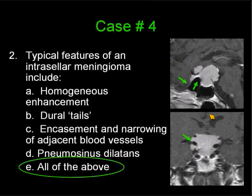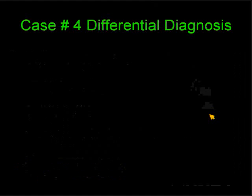A finding fairly typical for meningiomas in this region is the hyperaeration of the sphenoid sinus — in this case the anterior portion — which we call pneumosinus dilatans. There are primary pneumosinus dilatans caused by an obstructive lesion expanding the sinus, and a secondary type, which is what this is: secondary to an extrasphenoidal mass, in this case a meningioma.